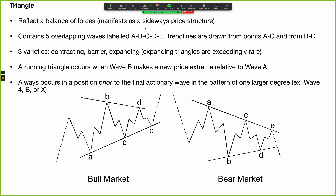A running triangle occurs when wave B makes a new price extreme relative to wave A. In a bullish trend, notice how wave B makes a new price extreme above the prior wave. That's where triangles trip up a lot of people — many who say they're using Elliott ignore the running triangle because they haven't read through all the rules and guidelines. Here we also have a bearish impulse wave followed by a bearish running triangle, where wave B is making a new price extreme relative to the end of the prior bearish impulse.